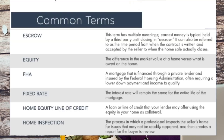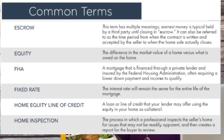Escrow: This term has multiple meanings. It can mean earnest money held by a third party until closing. It can also refer to the time period from when the contract is written and accepted by the seller to when the home sale actually closes. Equity: The difference in the market value of a home versus what is owed on the home.